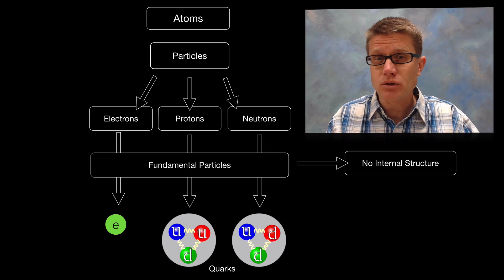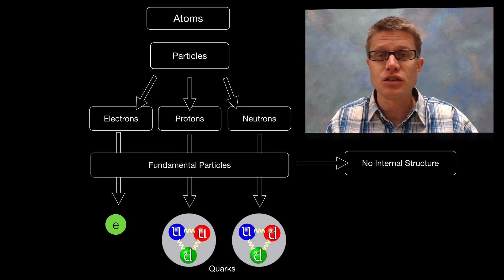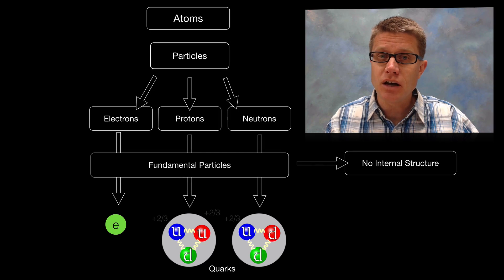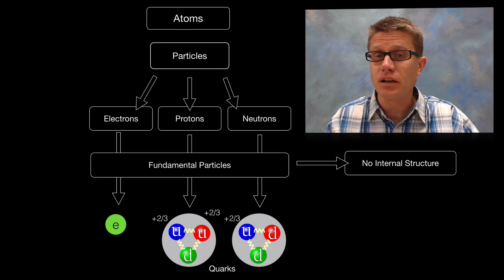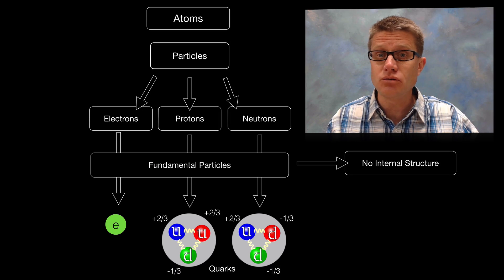Now when you get to the level of the quarks we will find that they have properties like mass and spin and charge. And we can sum up those charges and it tells us a lot about the overall charge of the protons and the neutrons.